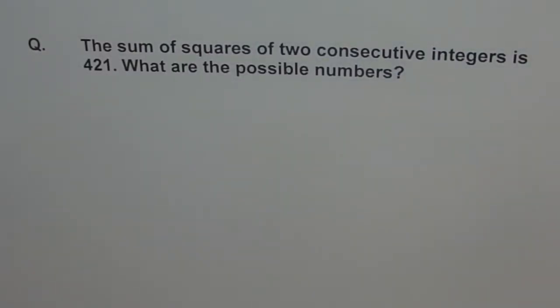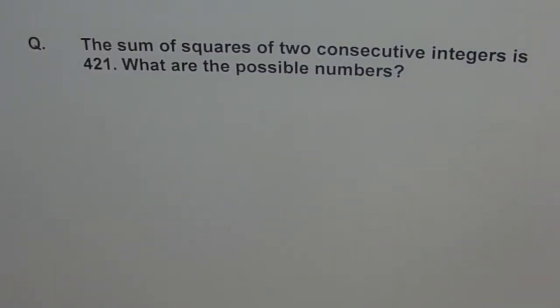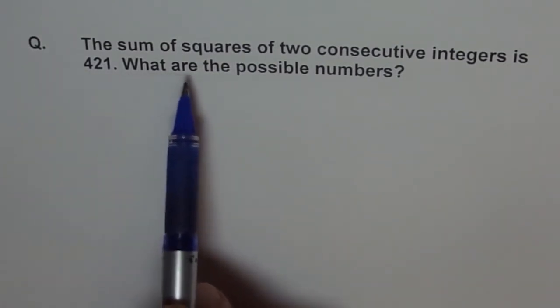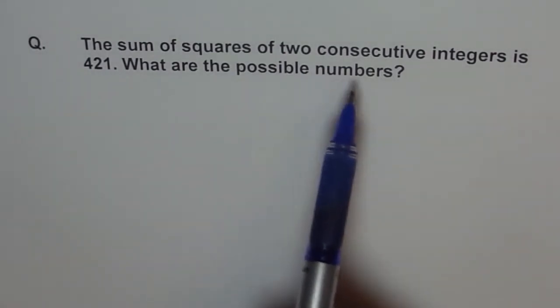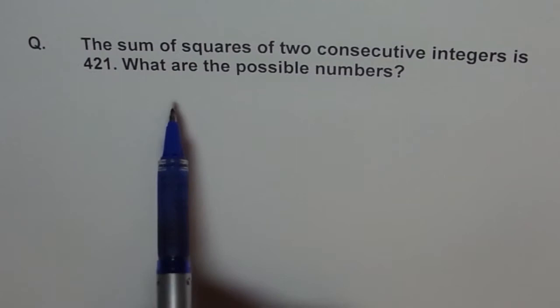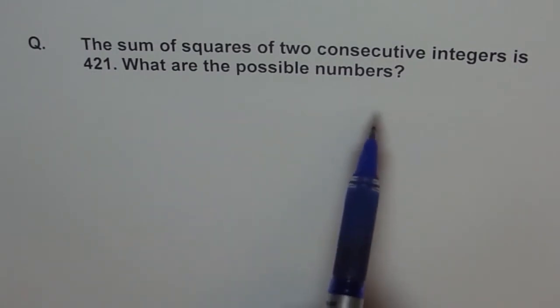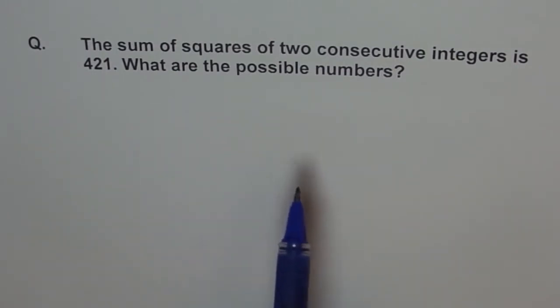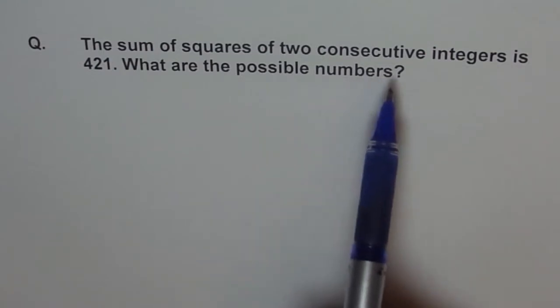Hello, let's look into this problem. It involves consecutive integers. The problem says the sum of squares of two consecutive integers is 421. What are the possible numbers? Now first part is, what are consecutive integers?